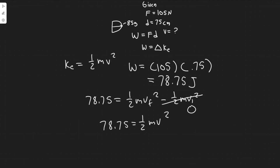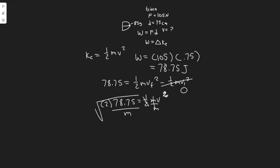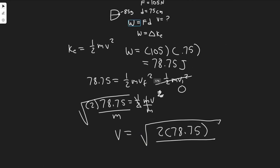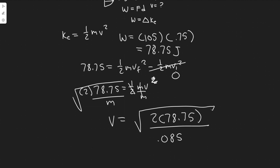To solve for velocity, we just isolate v: multiply both sides by 2, divide by m, then take the square root of both sides. So velocity equals the square root of 2 times 78.75 divided by the mass. The mass is 85 grams, which is 0.085 kilograms — we need the right units. Plugging this in: square root of (2 times 78.75 divided by 0.085) gives 43 meters per second.